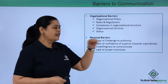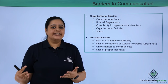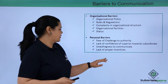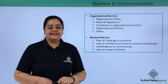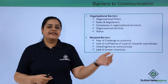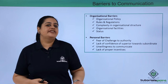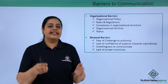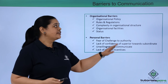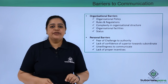Unwillingness to communicate: if an employee doesn't have the willingness to communicate for some reason, that acts as a barrier. Lack of proper incentives is another example — if a boss hears a suggestion but presents it to management as his own rather than the team's, and doesn't give credit or incentive for good suggestions, employees will not be willing to communicate, creating a barrier.